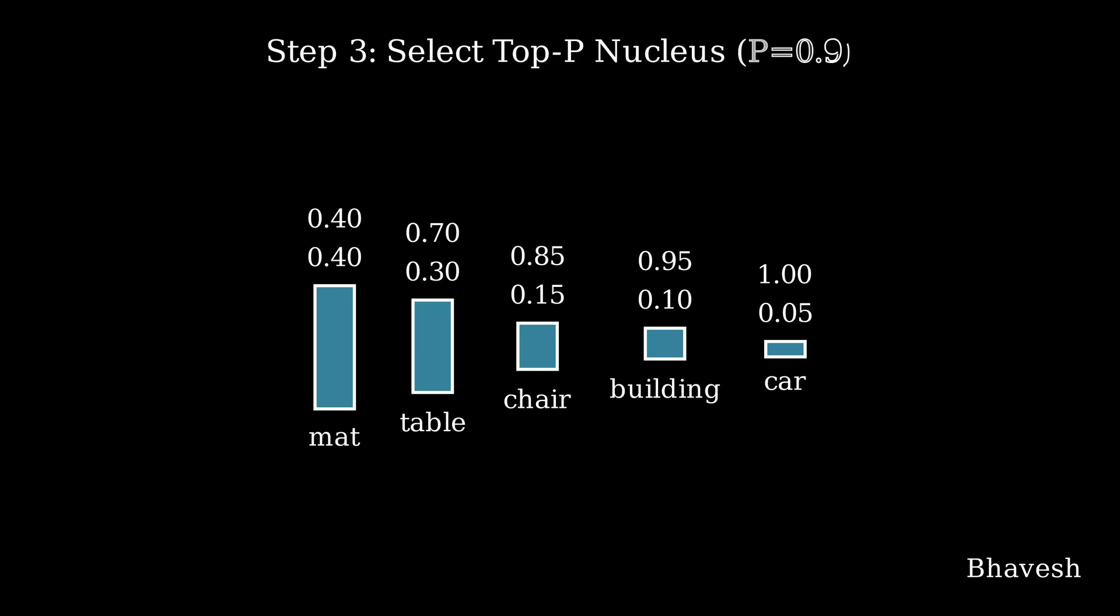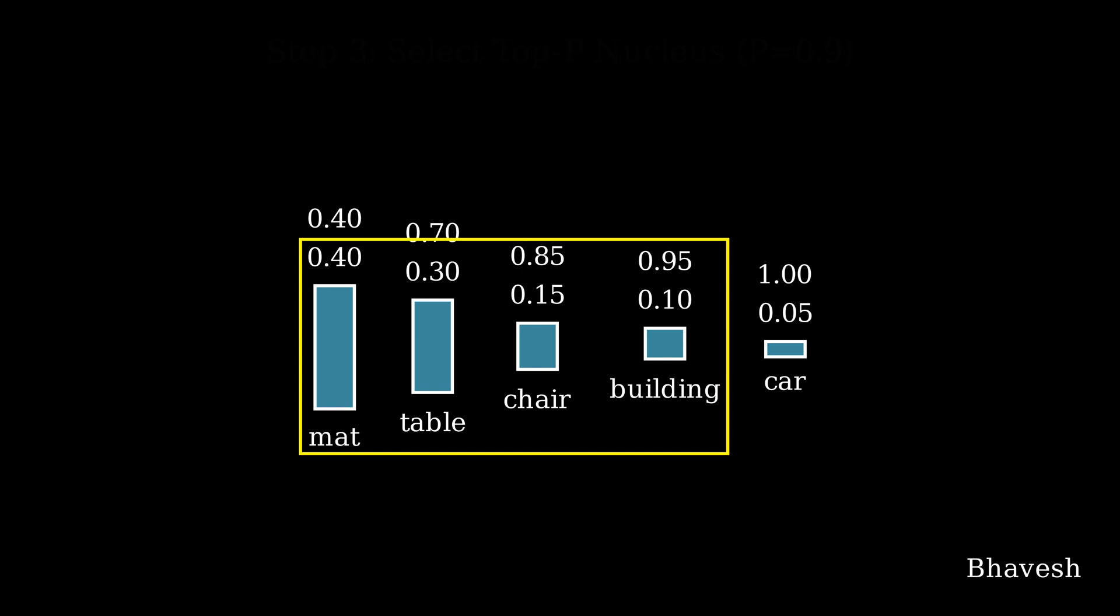If I select the Top-P nucleus to be equal to 0.9, given that 0.95 falls within the 0.9 range, I select the top 4 entries. If the nucleus value were 0.8, I would have selected only the top 3 entries. Given the nucleus selects 4 entries—mat, table, chair, and building—the LLM will choose one word randomly. In this case, it picked 'table' as the sampled word.